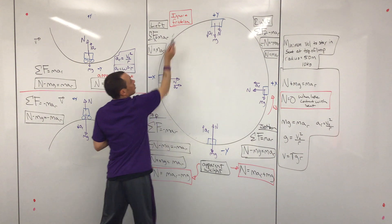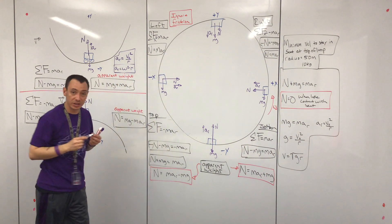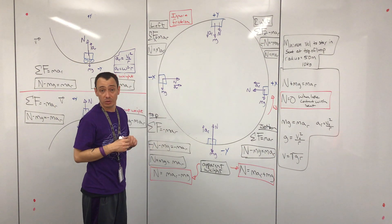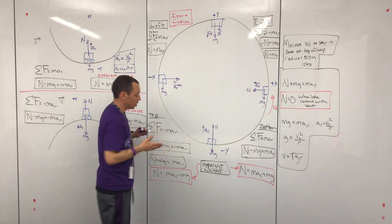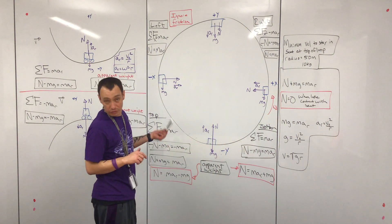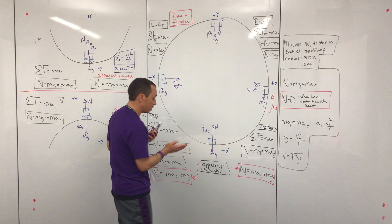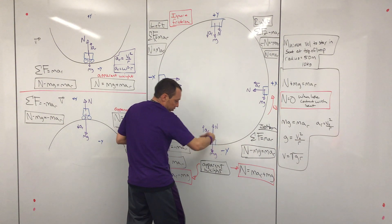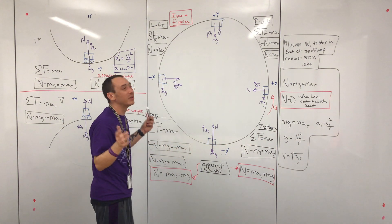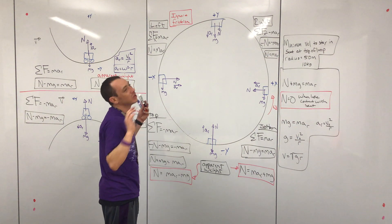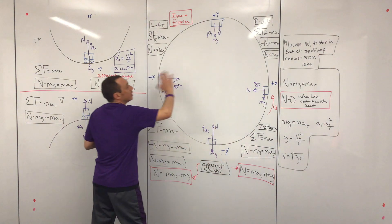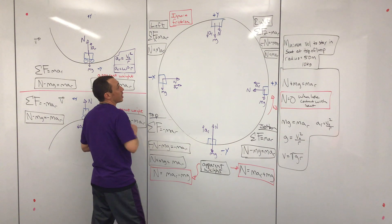Also keep in mind that as we do this, we're ignoring friction. That's why these free body diagrams look the way they do. Remember, friction resists motion — so if there was friction and we're moving this way, friction would be in the opposite direction. We want to keep things simplified here.